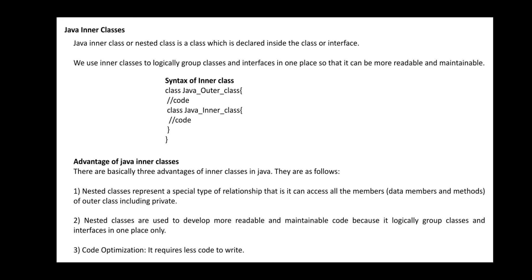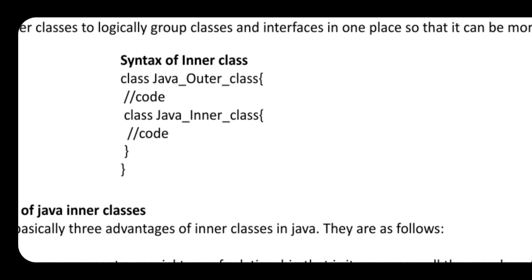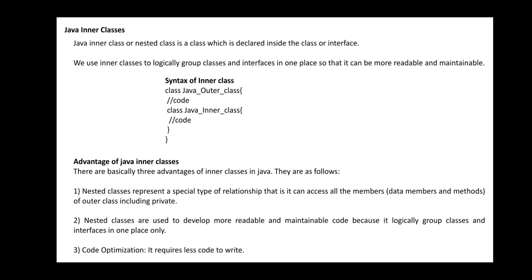When executing different sets of objects within a single class, defining outer as well as inner classes can be done within a single statement. You can check the syntax of an inner class here — the outer class is defined within braces, and within that, the inner class is defined. This is what we call a nested class or inner class. There are three different advantages of using inner classes.